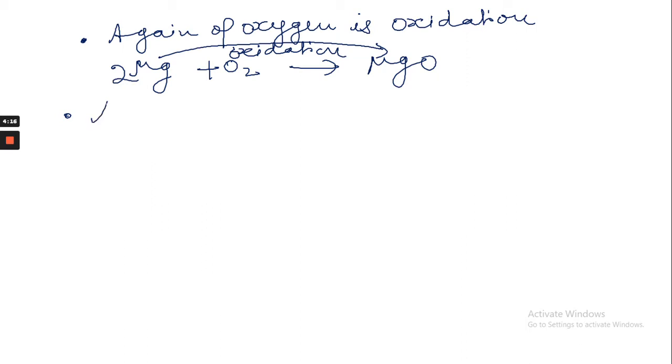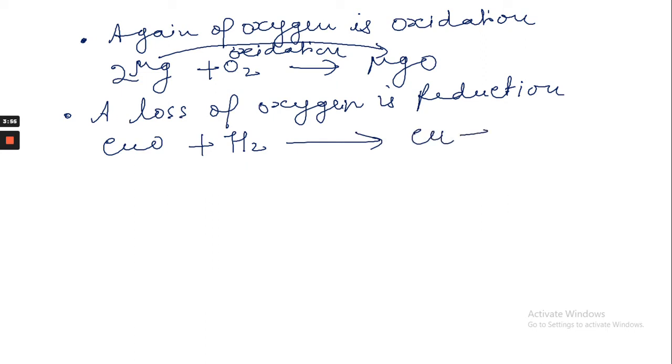We have also learned that a loss of oxygen is called reduction. When copper oxide burns in hydrogen it gives copper and water. So here copper oxide is reduced into copper and at the same time hydrogen is being oxidized into water. We can see both oxidation and reduction occur together, so it's a kind of redox reaction.